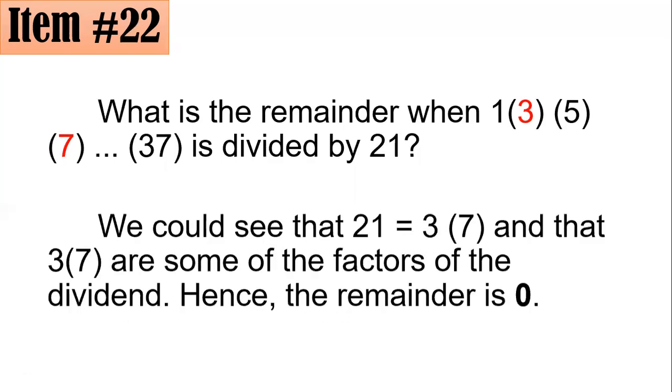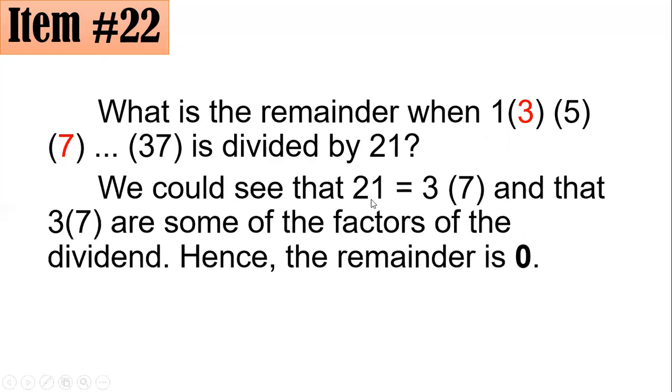But if you could see, 21 is in fact factorable as 3 times 7. And you could see that 3 times 7 here, the ones in red, are some of the factors of your dividend here. And since it is your divisor, which is a factor of your dividend, then it follows that the remainder is 0, letter A.